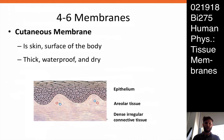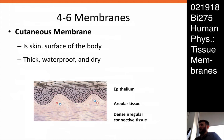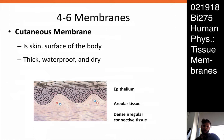And then finally is the cutaneous membrane — your skin. It covers the entire body. It's thick, waterproof, and dry. The epithelial layer is what we call the epidermis, and then the connective tissue layer is what we call the dermis, and there are several layers within each of those. The epithelium itself is a form of stratified squamous epithelium, whereas the connective tissue layer that forms the basement membrane for the epithelium is made of areolar tissue. But that areolar tissue sits on top of a deeper layer of dense, irregular connective tissue.